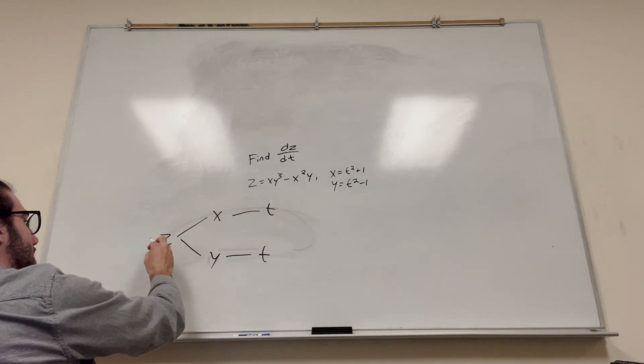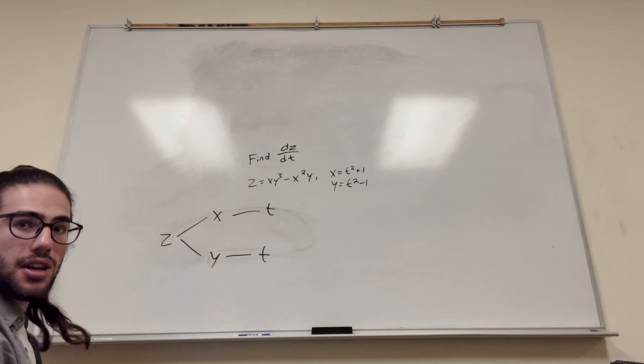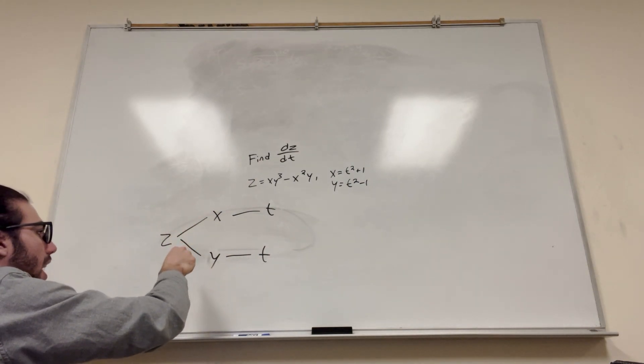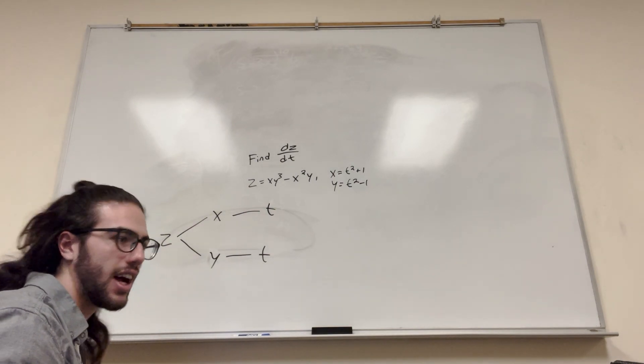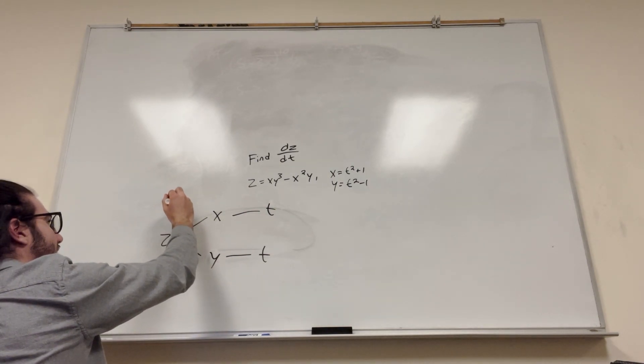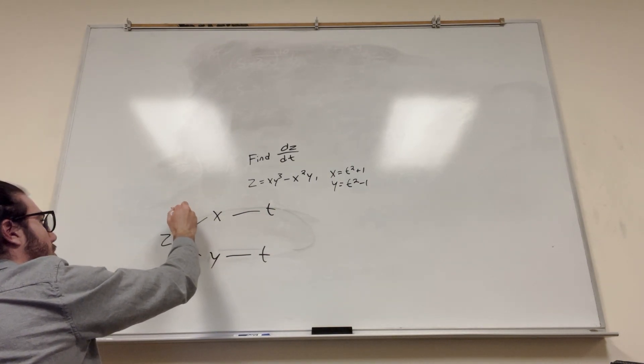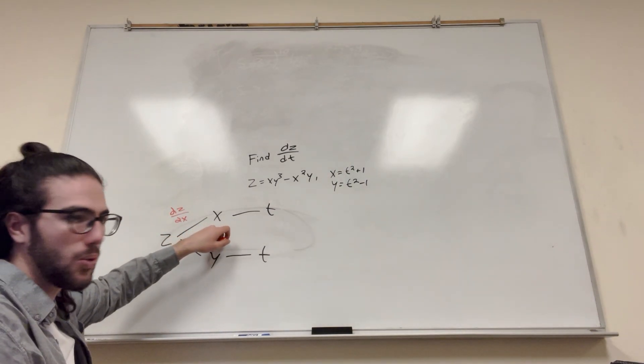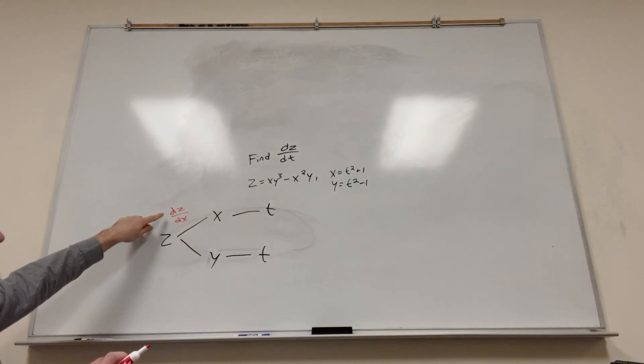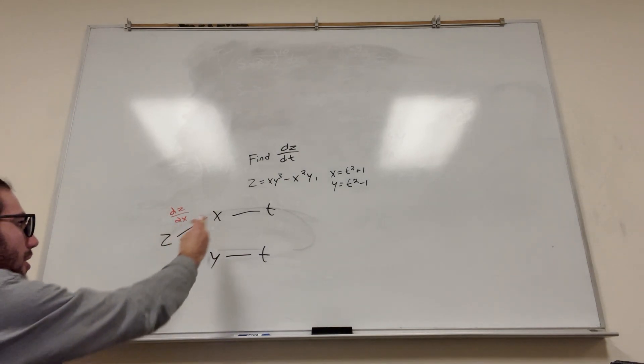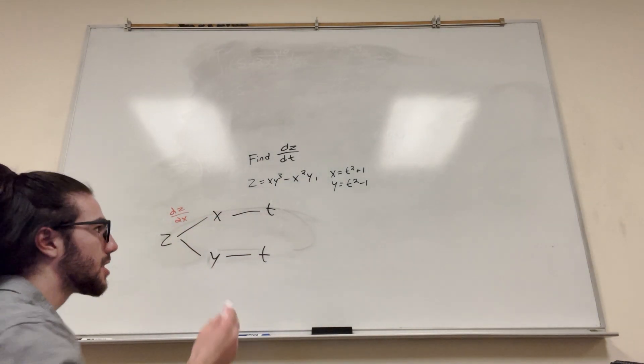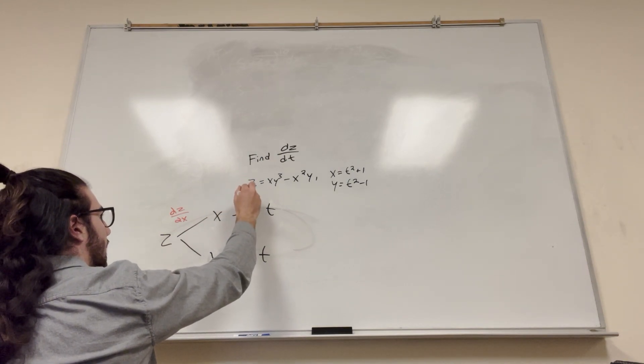So when you're taking the derivative of z, you can go two ways, right? You can go to x or you can go to y. We're going to go with x. But that means you're going to take a partial derivative. It's going to be a del, a curvy d, instead of a normal d, because you're taking only with respect to x. So, del z with respect to x. But then you're going from x to t. There's only one variable, so it's just going to be normal d, dx dt.